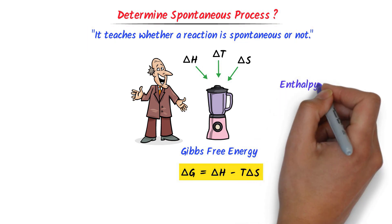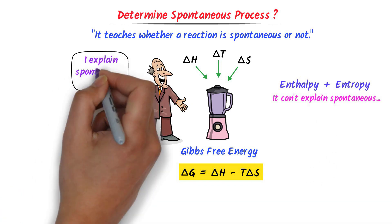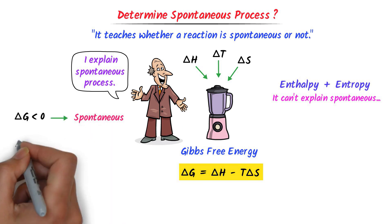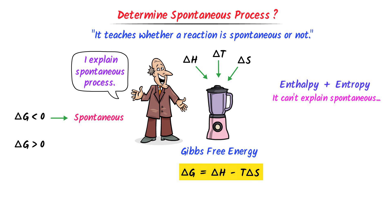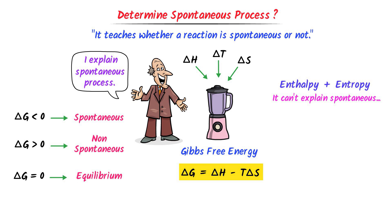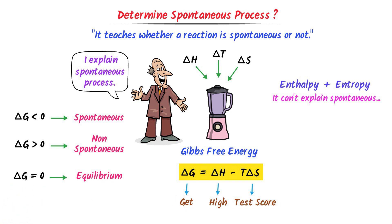Therefore, we say that enthalpy change and entropy alone cannot determine a spontaneous reaction. Rather, it is Gibbs free energy that determines whether a reaction is spontaneous or not. If ΔG is less than 0 or negative, it is a spontaneous process. If ΔG is greater than 0 or positive, it is a non-spontaneous process. If ΔG is equal to 0, it is an equilibrium stage. To remember Gibbs free energy, note down this easy mnemonic: 'Get High Testing Score.'